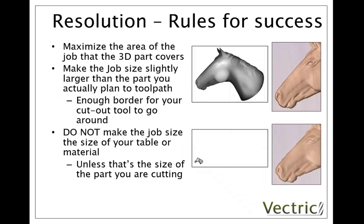Here you can see a 3D model of a horse and the rectangle around it represents the job setup. What you don't want to do is make your job size the size of your table or material unless that's the size of the part you're cutting. In the top example we've got a 10-inch horse's head set up in a job that's just slightly bigger — maybe 12 inches in width. At the bottom we've taken that same 10-inch horse and placed it in a job size of 4 feet by 8 feet. You can see the quality difference: at the top we get a very high quality image because we're maximising the number of pixels within the work area, while at the bottom far fewer points fall under the model, resulting in a clear sacrifice in quality.